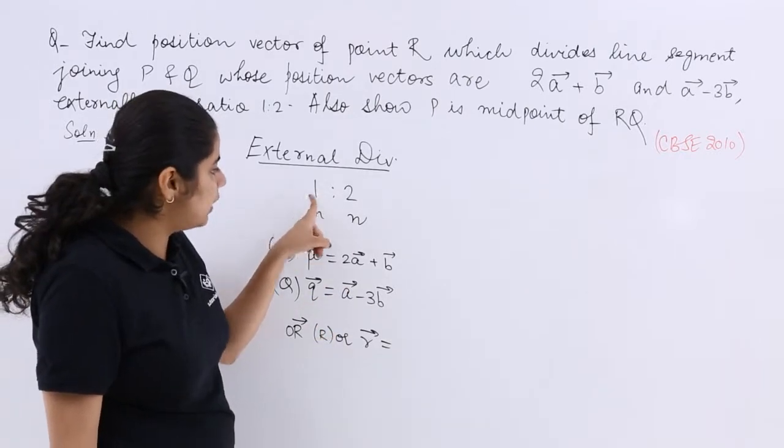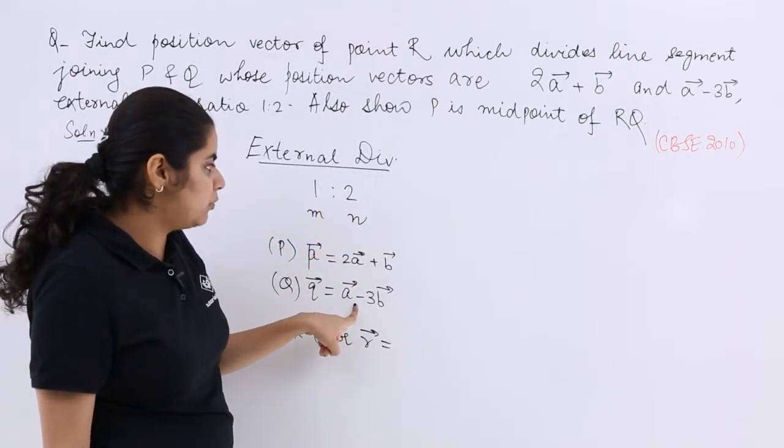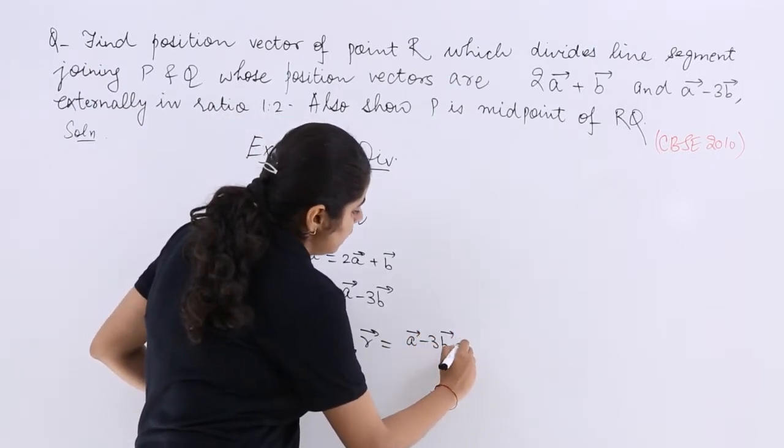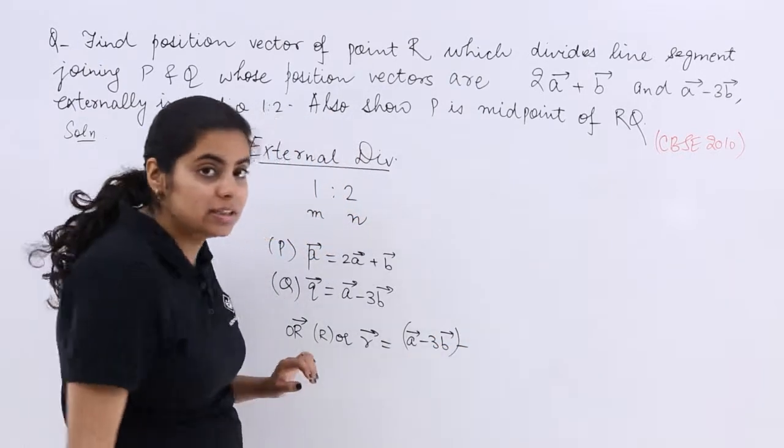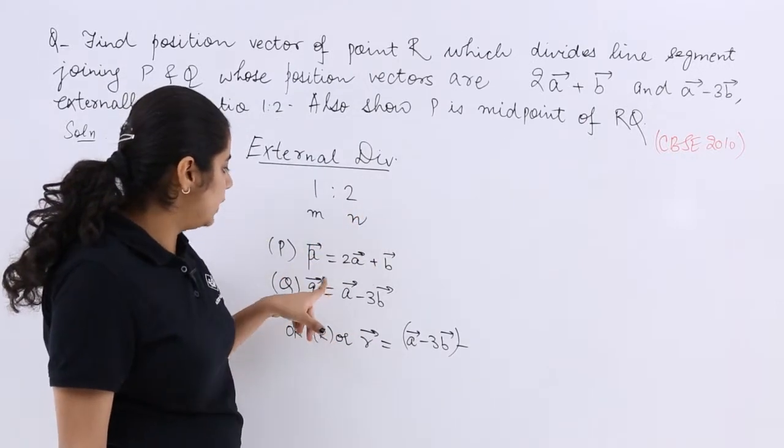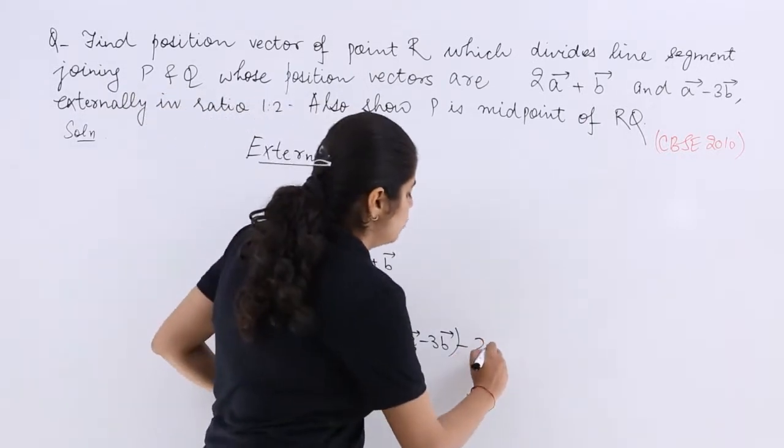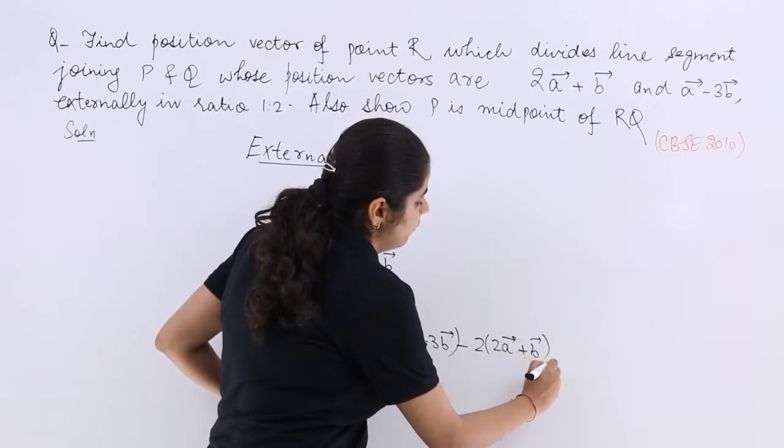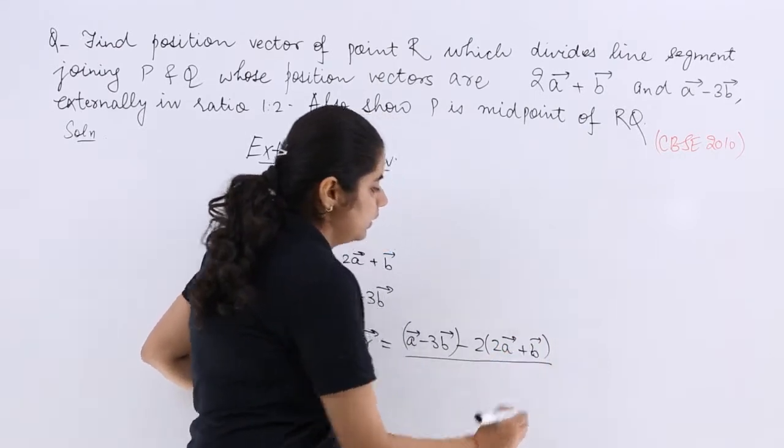The answer should be I know that my R vector should be obtained by external division. So it is 1 multiplied by the farther end which is A vector minus 3B vector. Then minus sign because of the external division case. 2 multiplied by 2A vector plus B vector.